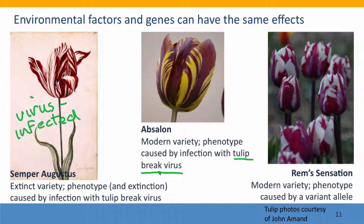What geneticists have done is they've bred tulips that express the same phenotype because of a variant allele. This is a tulip that has a very similar phenotype to those tulips, but it's not infected by the virus. Instead, it has a variant allele controlling flower color that doesn't affect the viability of the plant.